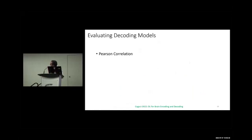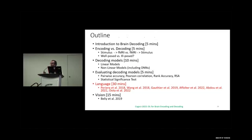Other evaluation metrics include Pearson correlation — for one voxel, if you have a feature dimension of 768 (as in BERT) and the predicted model also gives 768 dimensions, you can compute the correlation. Some people also use mean squared error between the actual and predicted stimulus representations.